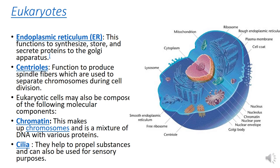Eukaryotic cells may also be composed of the following molecular components: chromatin, which makes up chromosomes and is a mixture of DNA with various proteins; and cilia, which are used to propel substances and can also be used for sensory purposes.